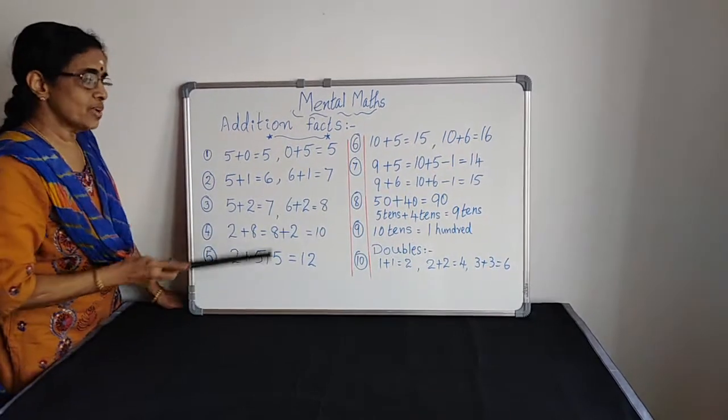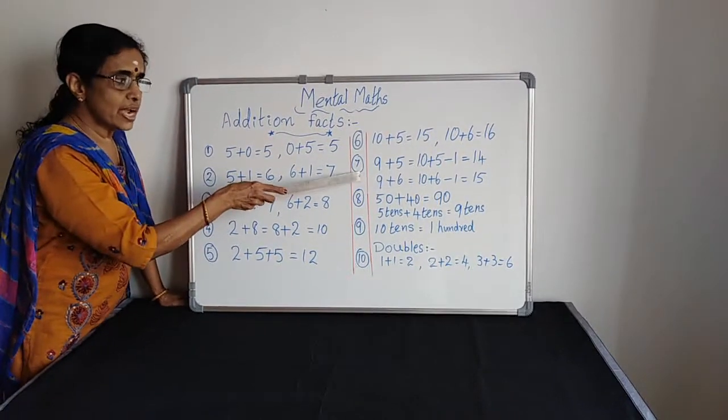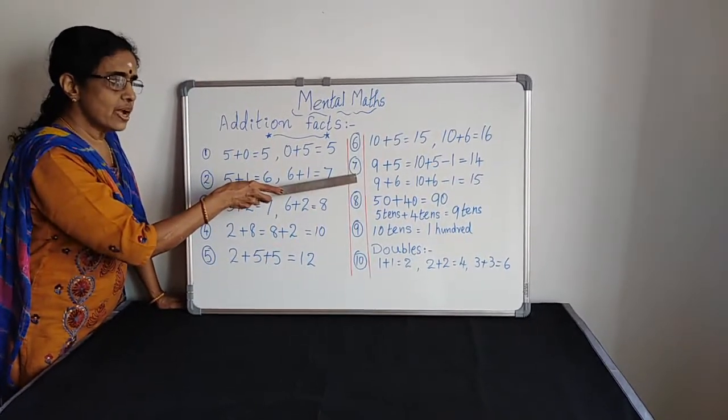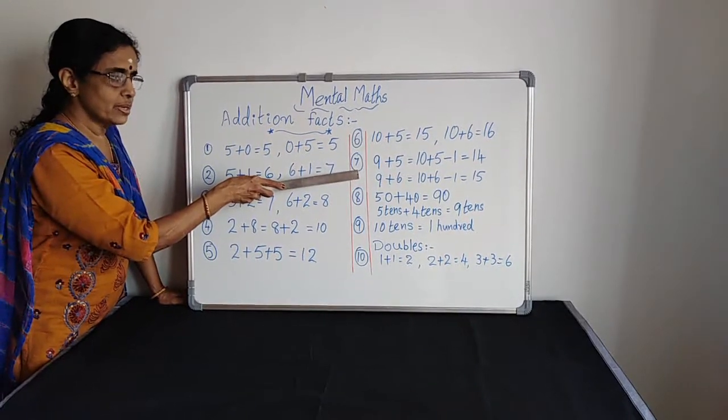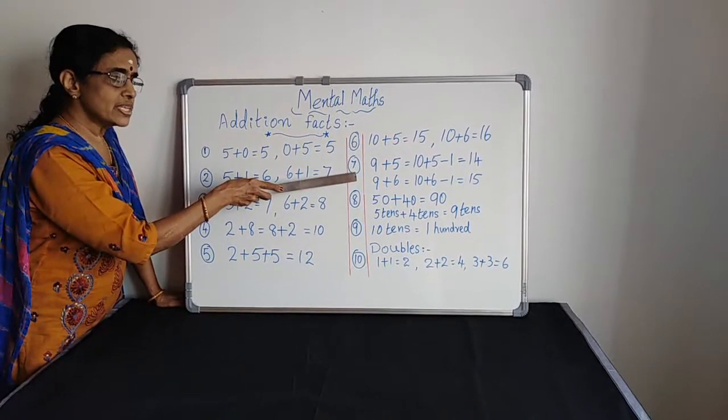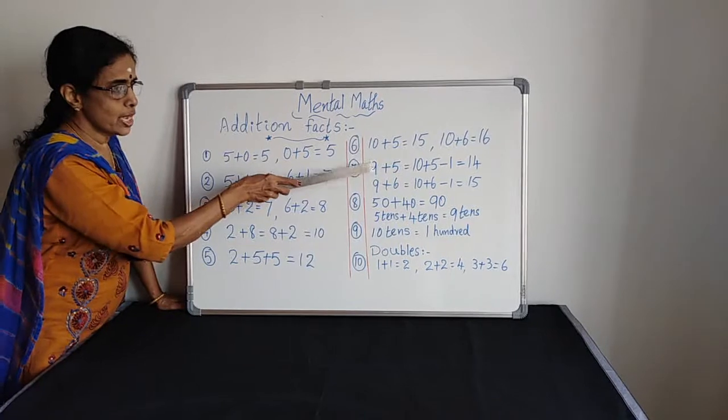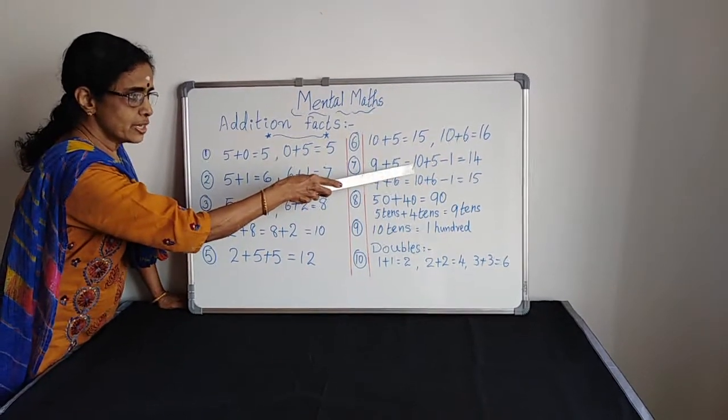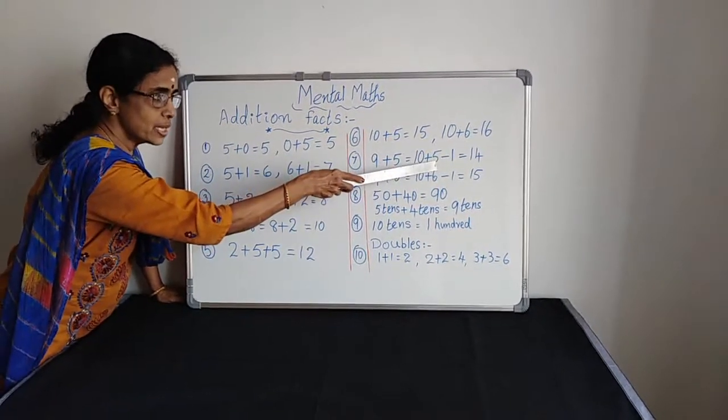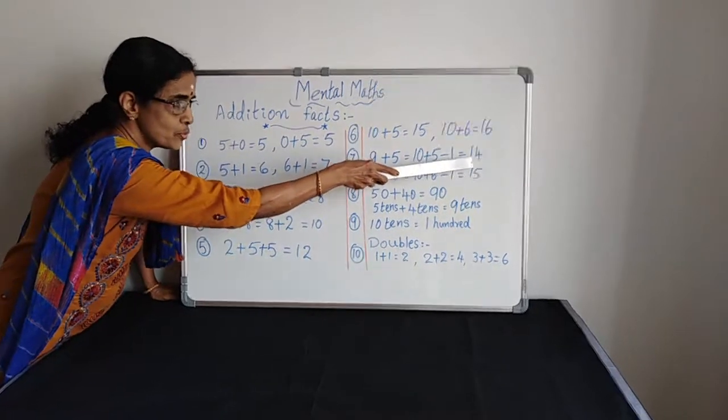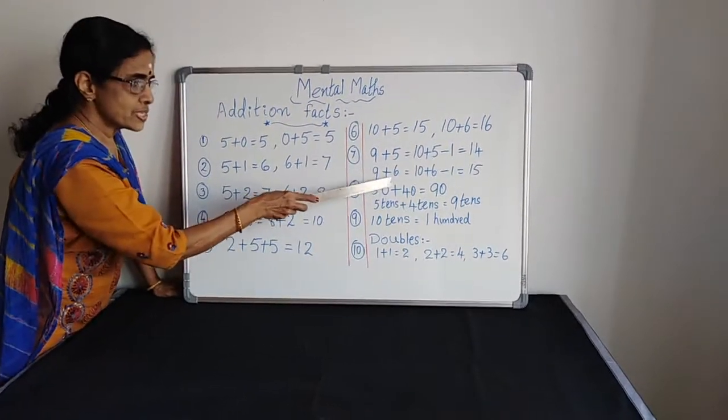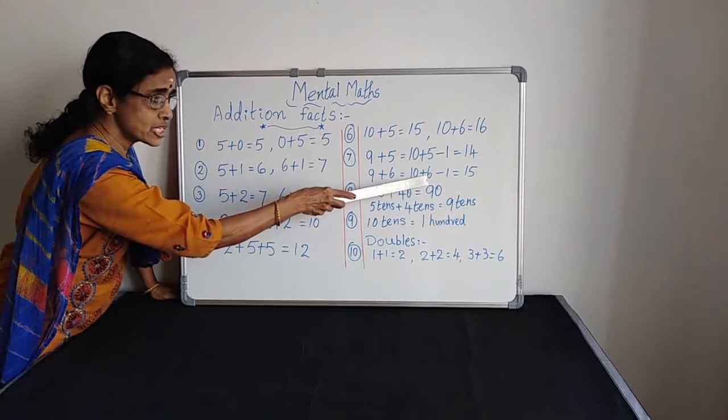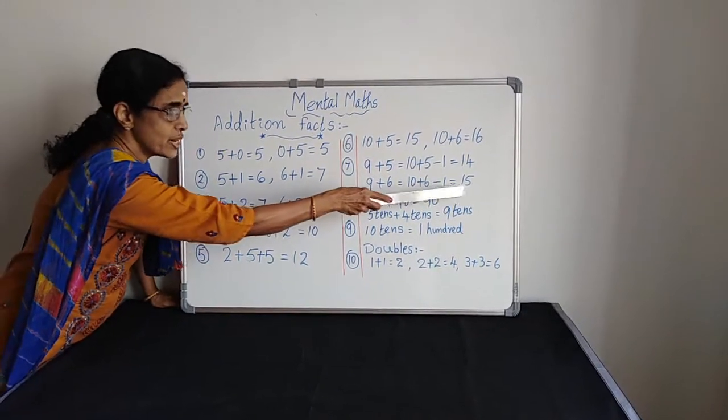Rule 7: We are adding 9. When we are adding 9, easy way is add 10, subtract 1, because 9 is 10 minus 1. So 9 plus 5: we are adding first 10, so 10 plus 5 makes 15, 15 minus 1 is 14. 9 plus 6: 10 plus 6 makes 16, 16 minus 1 is 15.